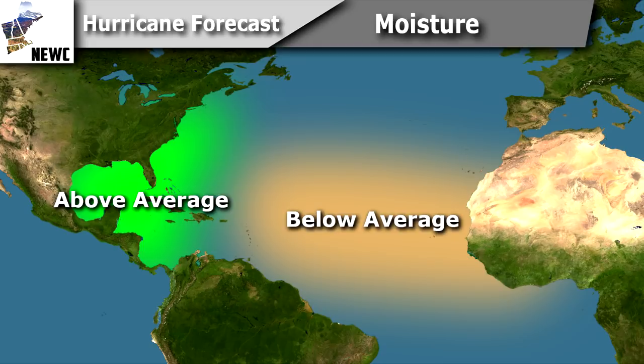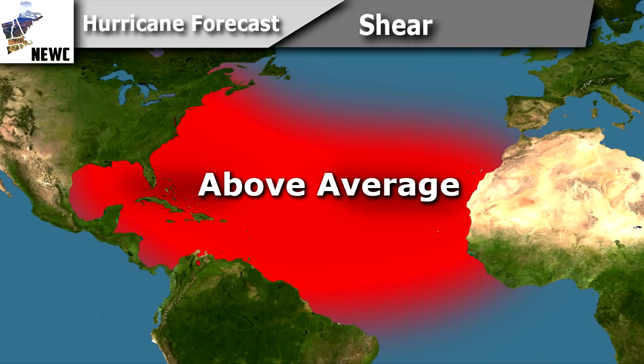Now we're going to look at the shear forecast. You can see that pretty much the entire developmental area is above-average shear. This is really bad for development — it takes the tops off of storms and really doesn't let them get very strong at all, even combined with the lack of moisture that's going to be there off the coast of Africa.